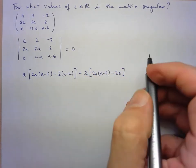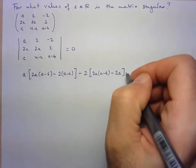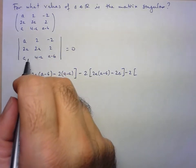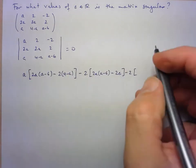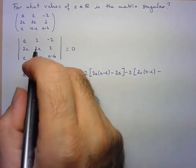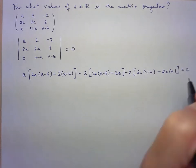And lastly, so now again, it's going to be plus this term here. But since I'm adding a negative number, it'll just be minus 2 times, and now the determinant of this remaining 2 by 2 matrix. So 2A times 4 minus A, minus 2A times A. And all that has to be equal to zero.